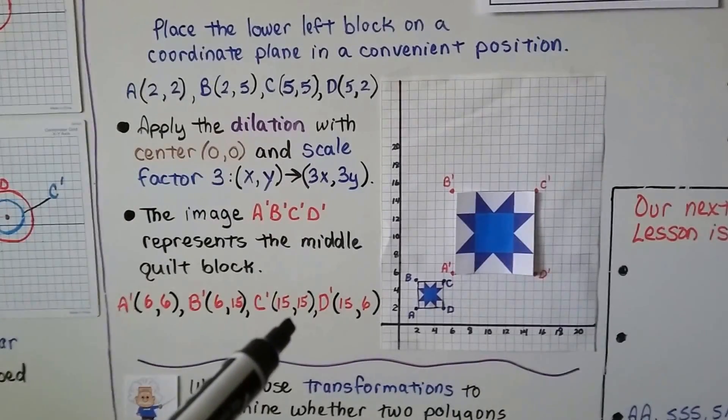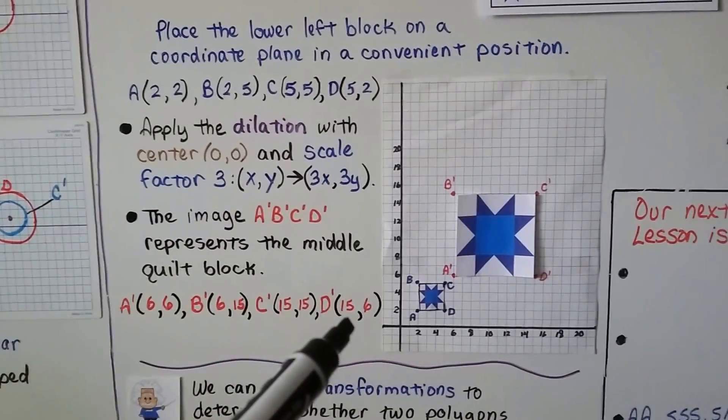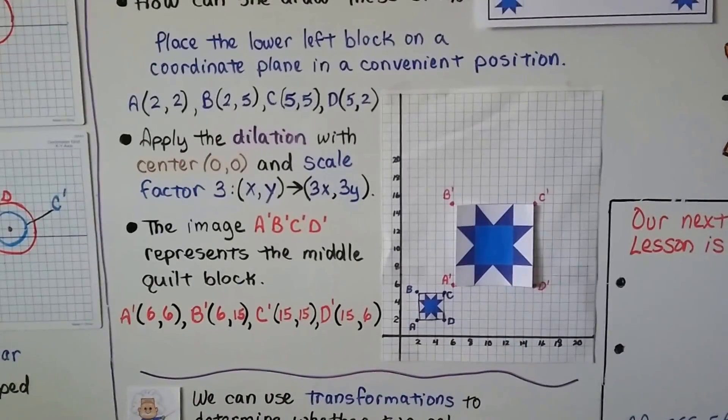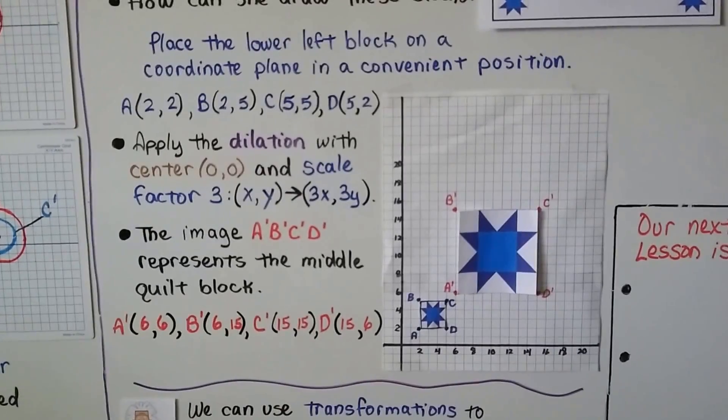This is multiplied, so we get 15,15. This is multiplied by 3, so we get 15,6. And those are the ordered pairs for the image.